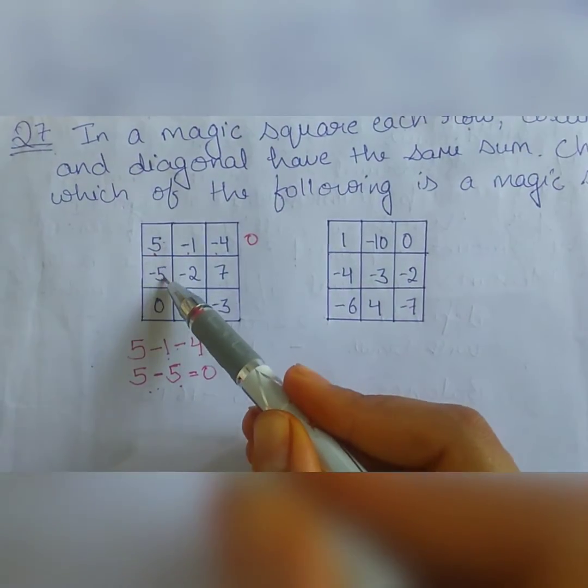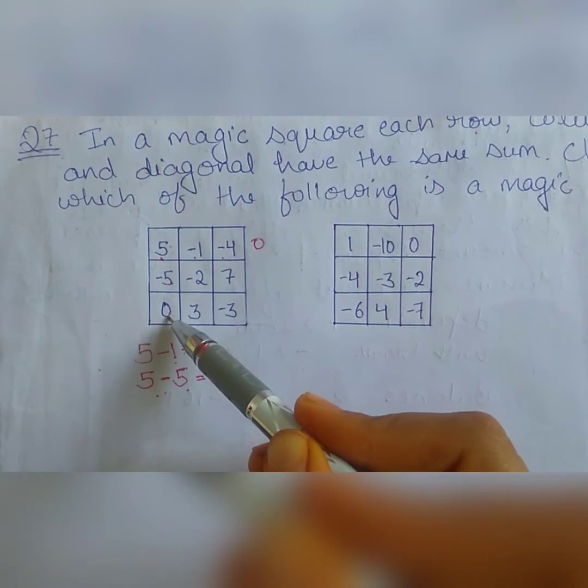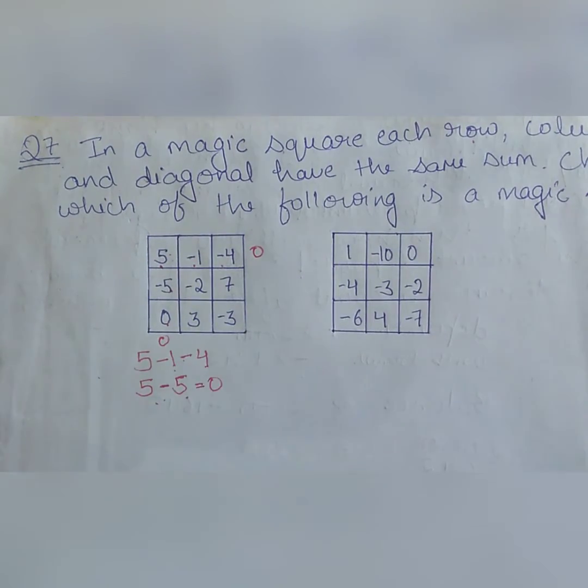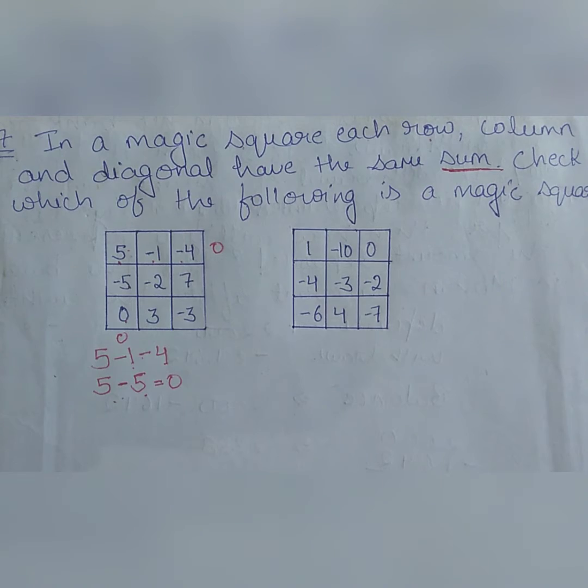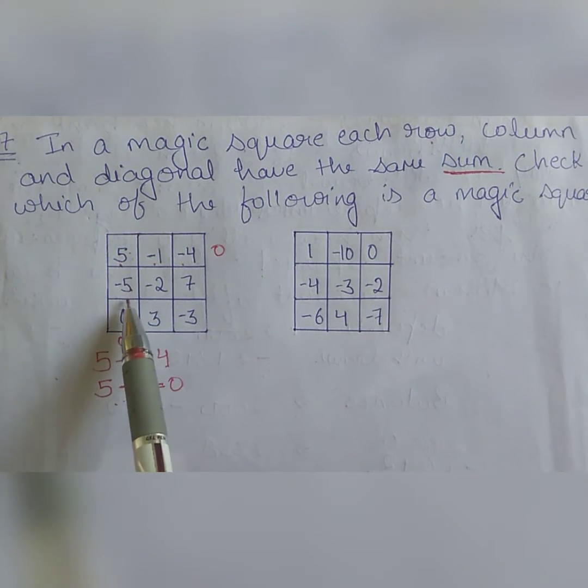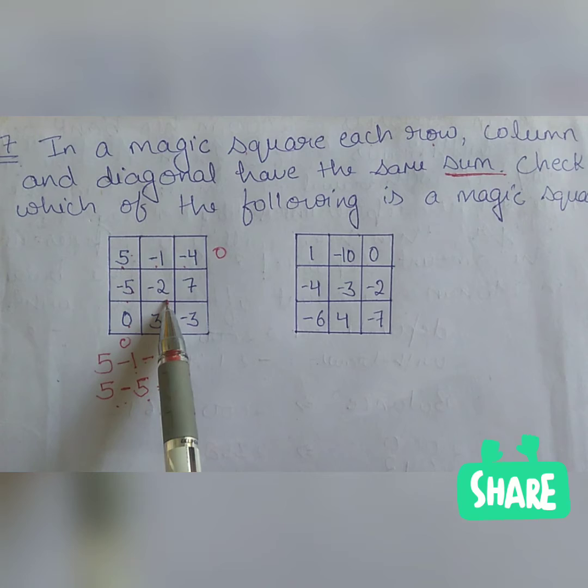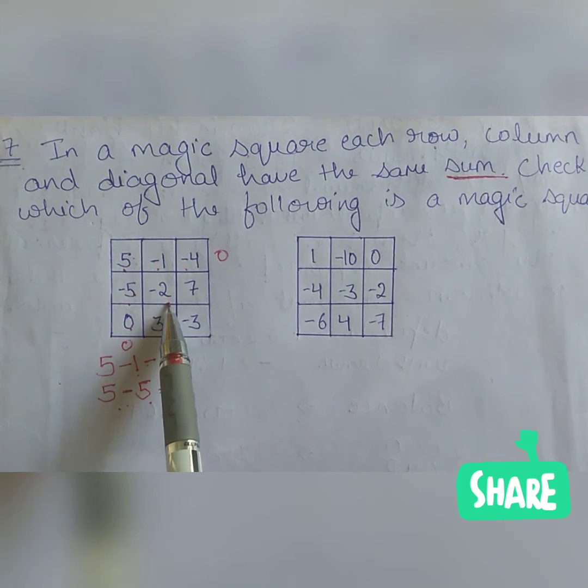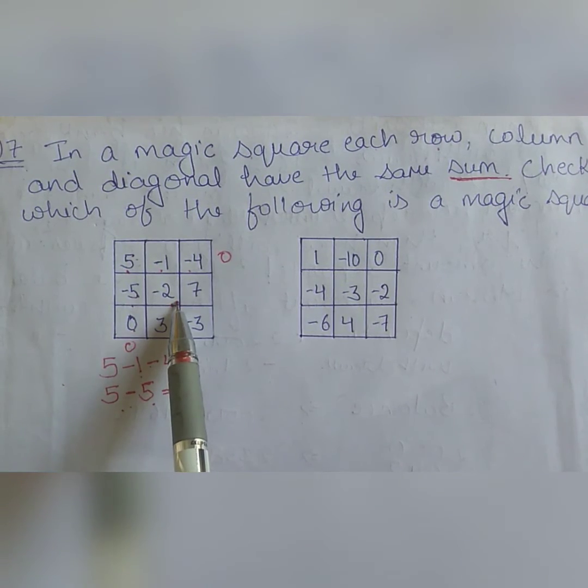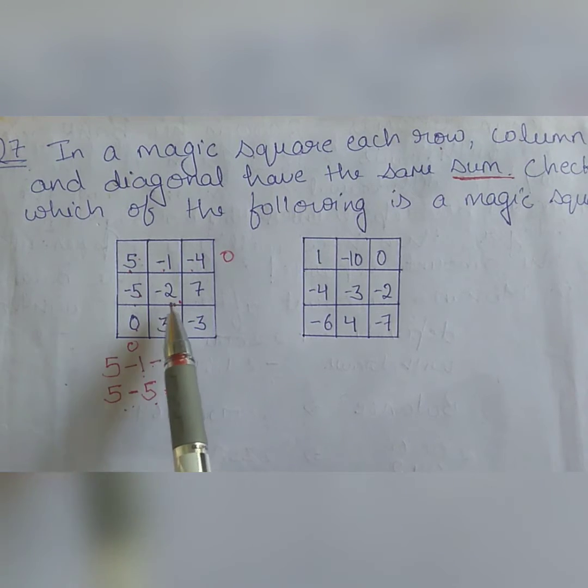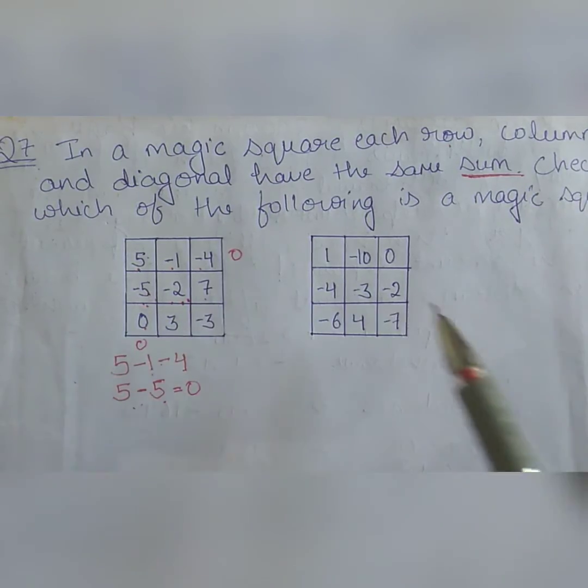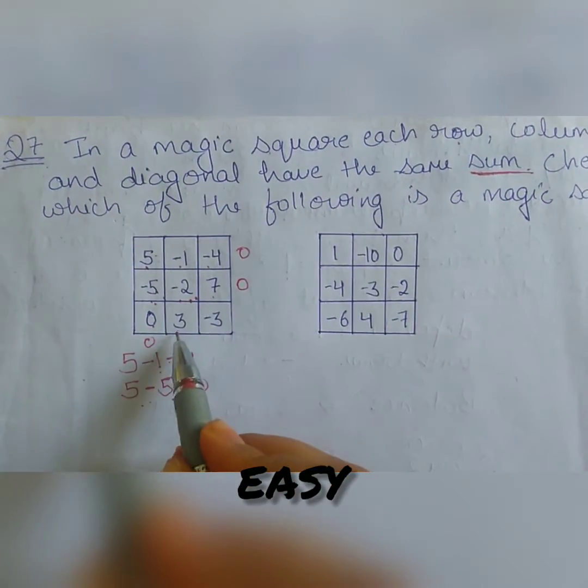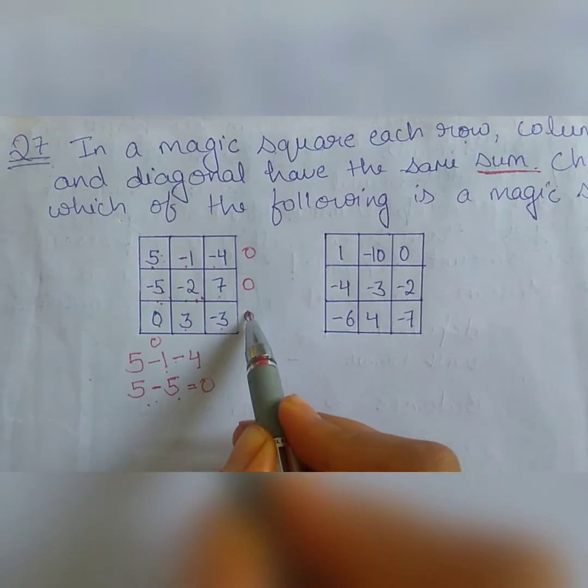Now here 5 minus 5 plus 0, it is clearly 0. We are doing sum, okay, it is clear. In question it is mentioned that we have to add them or we have to do the sum of them. So here minus 5 plus minus 2, minus minus becomes plus. So 5 plus 2 is 7 but it will be minus 7 as the sign is negative, and minus 7 plus 7, this will also be 0.